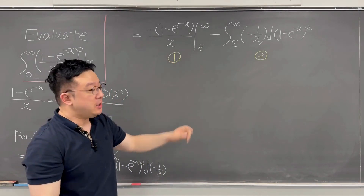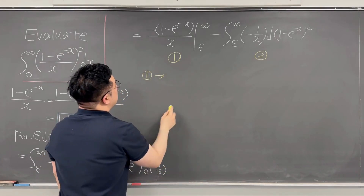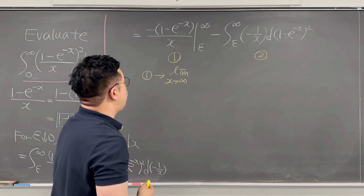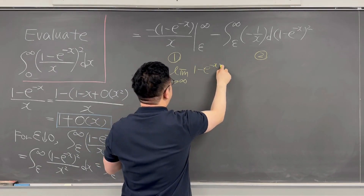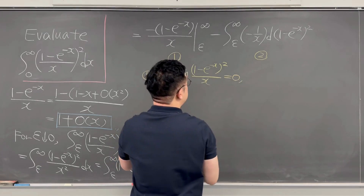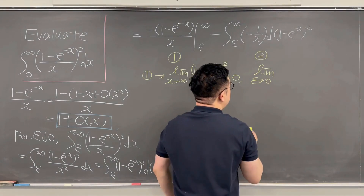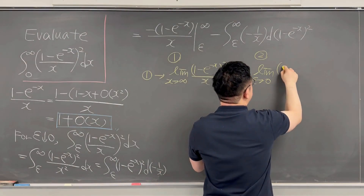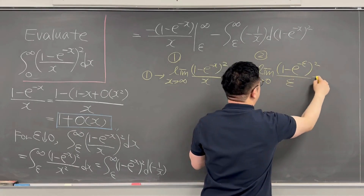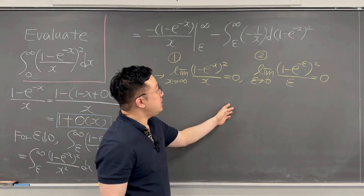For number 1: as x goes to infinity, (1 minus e to the power of negative x) squared over x equals 0. Then taking the limit as epsilon goes to 0, we have (1 minus e to the power of negative epsilon) squared over epsilon, which is also going to 0. So the boundary term number 1 vanishes entirely.